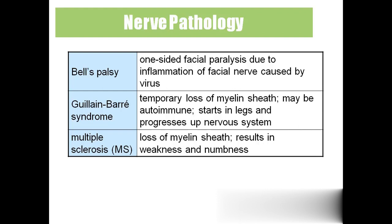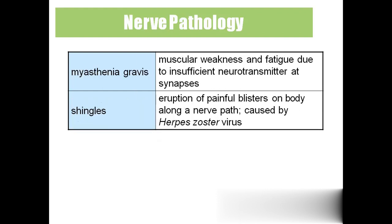'Multiple sclerosis' is also a loss of myelin sheath, but the person will have weakness and numbness that progresses over time. 'Myasthenia gravis' — 'myo' means muscle, 'asthenia' means weakness, and 'gravis' means depth of the muscle. Initially the muscles become weak, and later the muscle fibers die — this is called myasthenia gravis, caused by insufficient neurotransmitter. 'Shingles' is a painful eruption of blisters along the nerve path, caused by the herpes zoster virus.